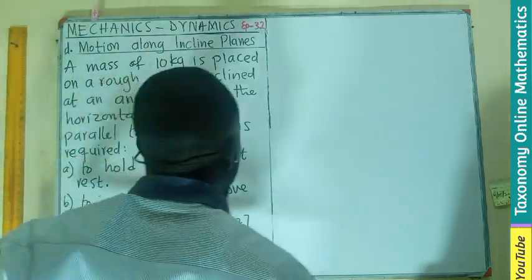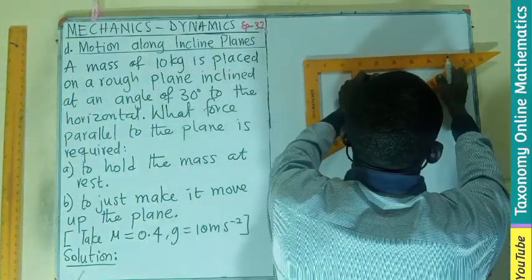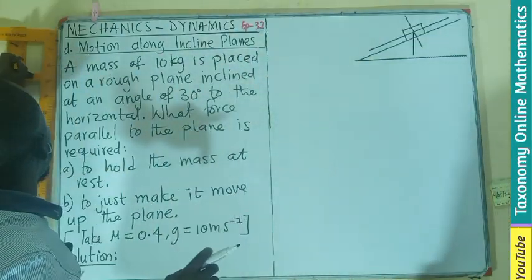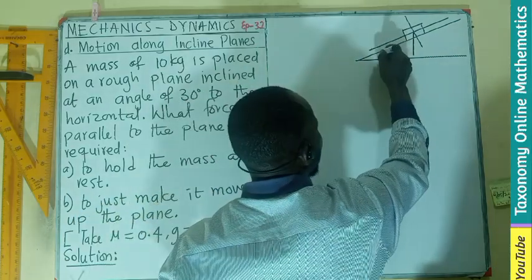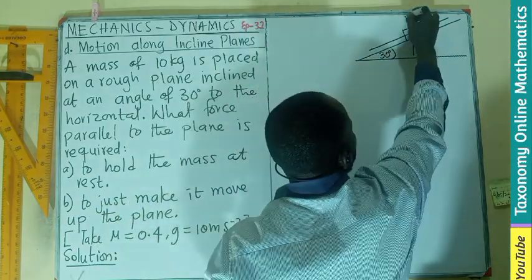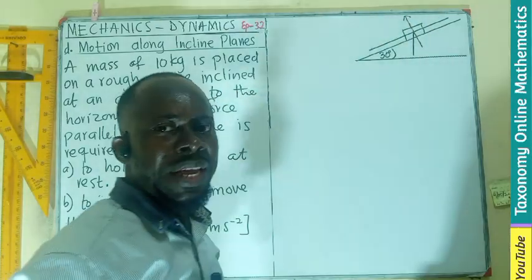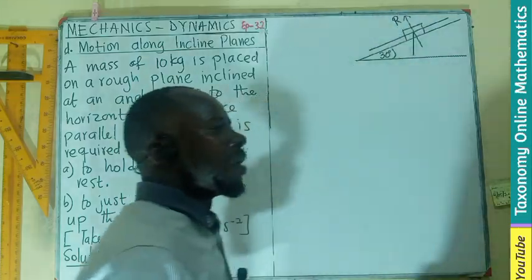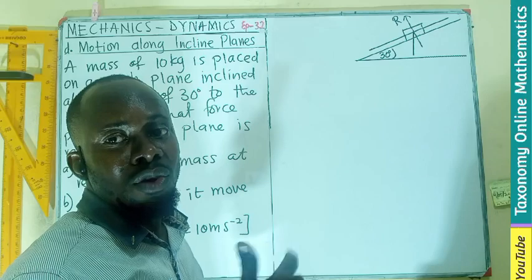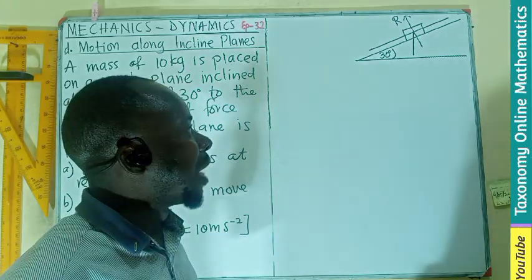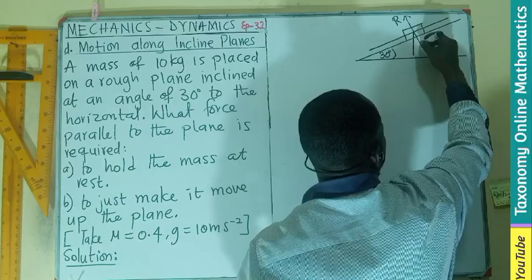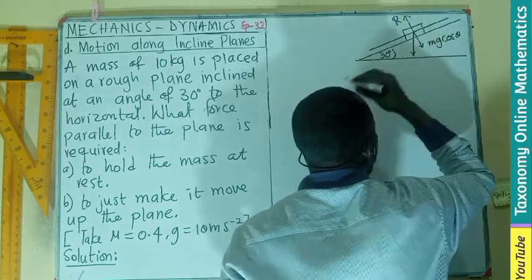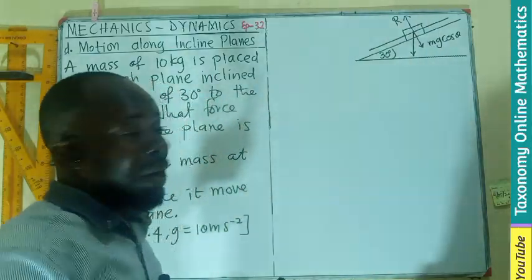Let's see if we can make a sketch of that plane. The angle of inclination from the question is 30 degrees. The force exerted by the plane on the body or on the mass is upward - that is the normal reaction. Then we also have a force of gravity going down as mg cos theta. This is the weight of the body. Then at this point, the surface is rough.